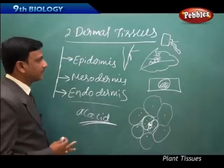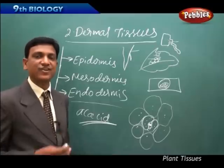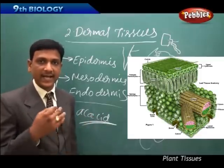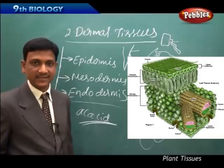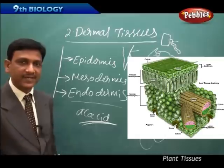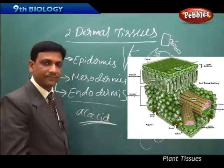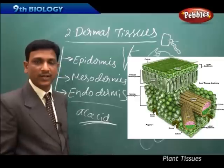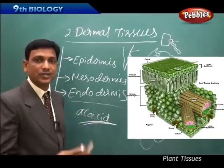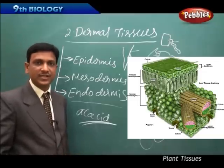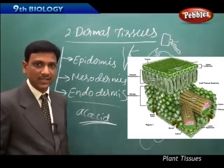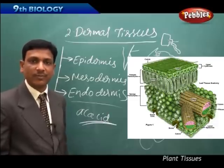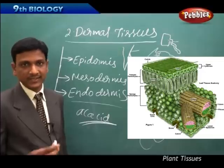Dermal tissues give protection to the plant by covering the inner parts and preventing foreign particles, organisms, bacteria, or pathogens from entering the plant body. They are the protective covering of the plant parts. Dermal tissues also protect the plant from loss of water, because plants have a lot of water supplied through the vascular system, and without this covering the water would be lost to the atmosphere by transpiration or evaporation.